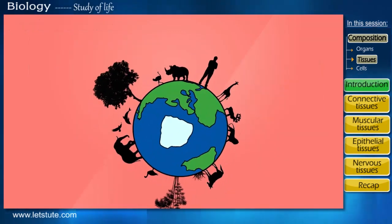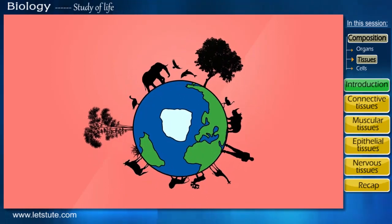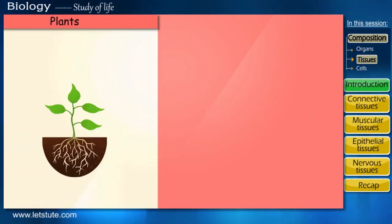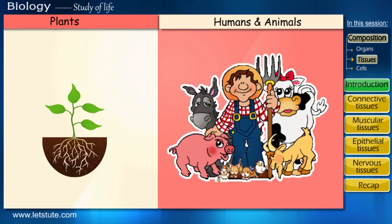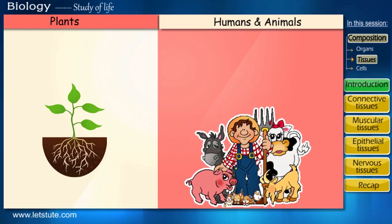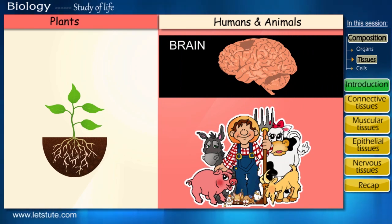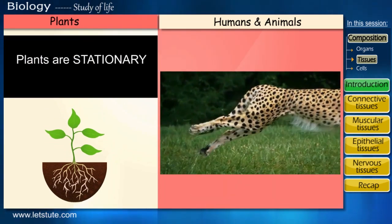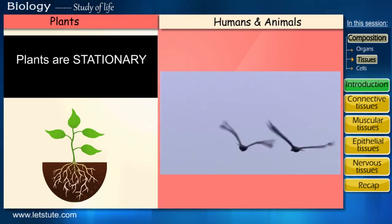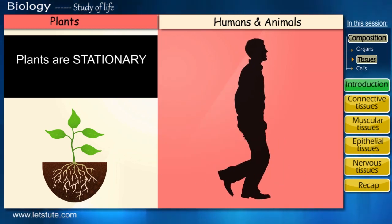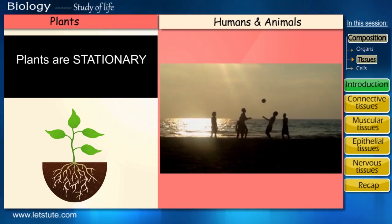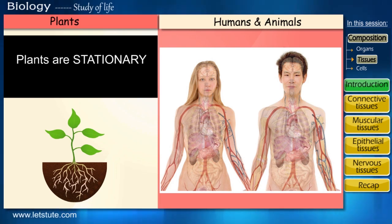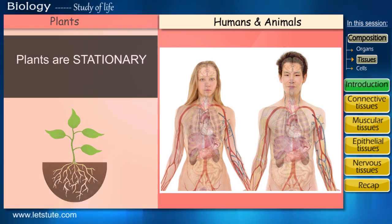Along with plants, we humans and other animals have also shared planet Earth as a home for many centuries. Our tissues will not be the same as that of plants. The most important difference is that we humans and other animals, using our brain, can make decisions and move in response to them — whereas plants are stationary. To capture its prey a cheetah will run at great speeds, birds fly long distances to avoid cold weather, and we humans walk and play games. All this movement in search of food, shelter, and mates requires more energy and much more complex organs and organ systems than a stationary tree would require.